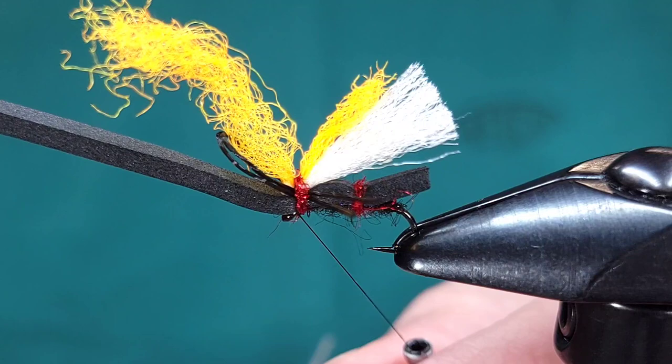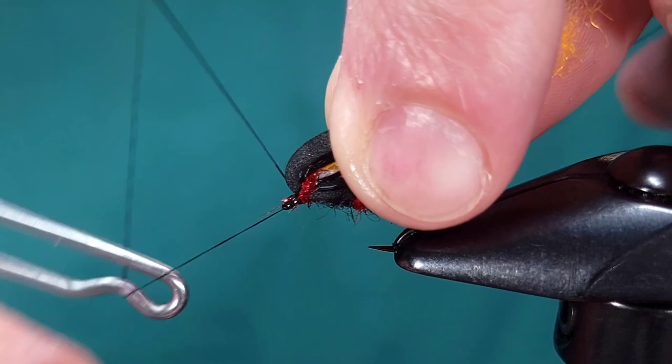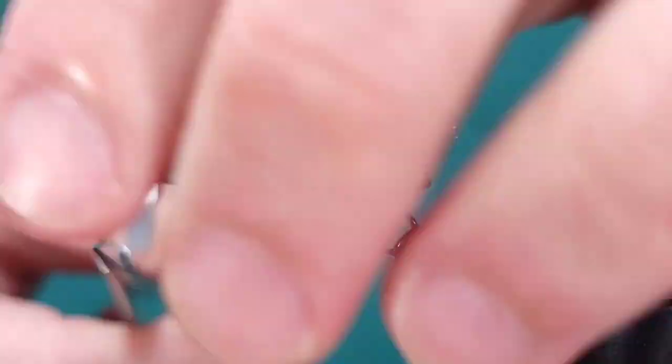And again you'll notice that I didn't snip anything off yet. I think this makes finishing the fly a little bit easier. Whip finish, snip my thread. Now I'm going to come in and snip this para post or poly yarn.